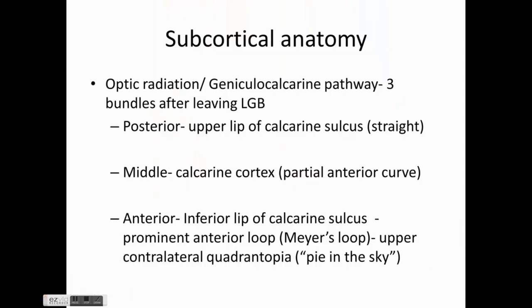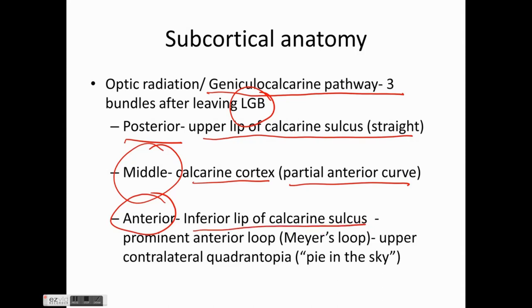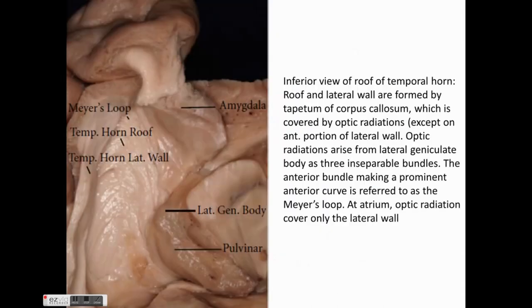Coming to subcortical anatomy, the optic radiations form part of the geniculocalcarine pathway. After leaving the lateral geniculate body, the optic radiation forms three bundles: the posterior bundle goes straight into the upper lip of the calcarine sulcus; the middle bundle goes to the calcarine cortex with a partial anterior curve; and the anterior bundle goes to the inferior lip of the calcarine sulcus with a prominent anterior loop known as Meyer's loop. Damage to Meyer's loop during temporal lobe epilepsy surgery can lead to upper contralateral quadrantanopia, the 'pie in the sky' visual field deficit.